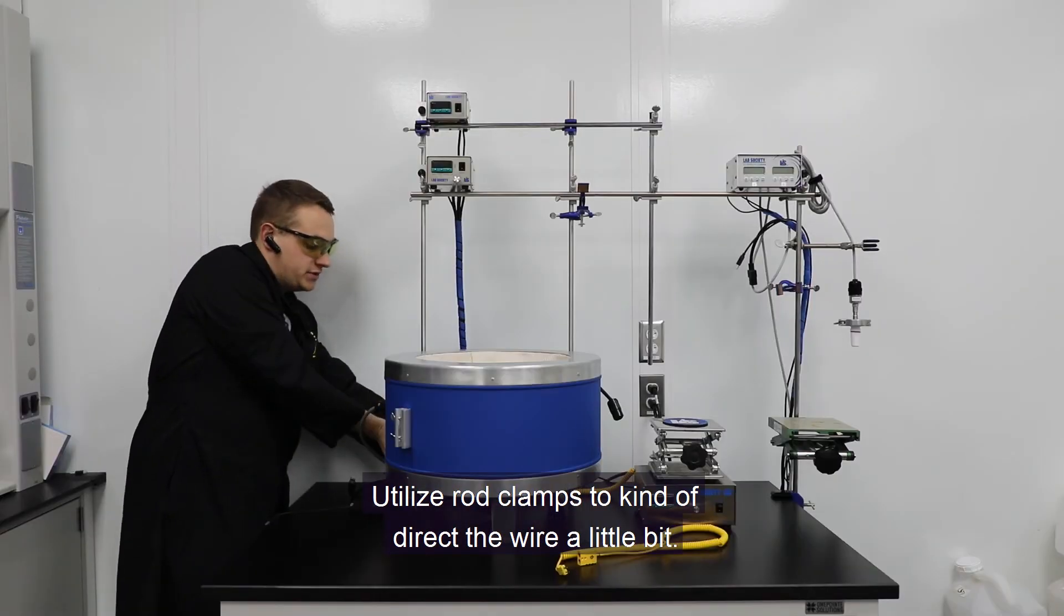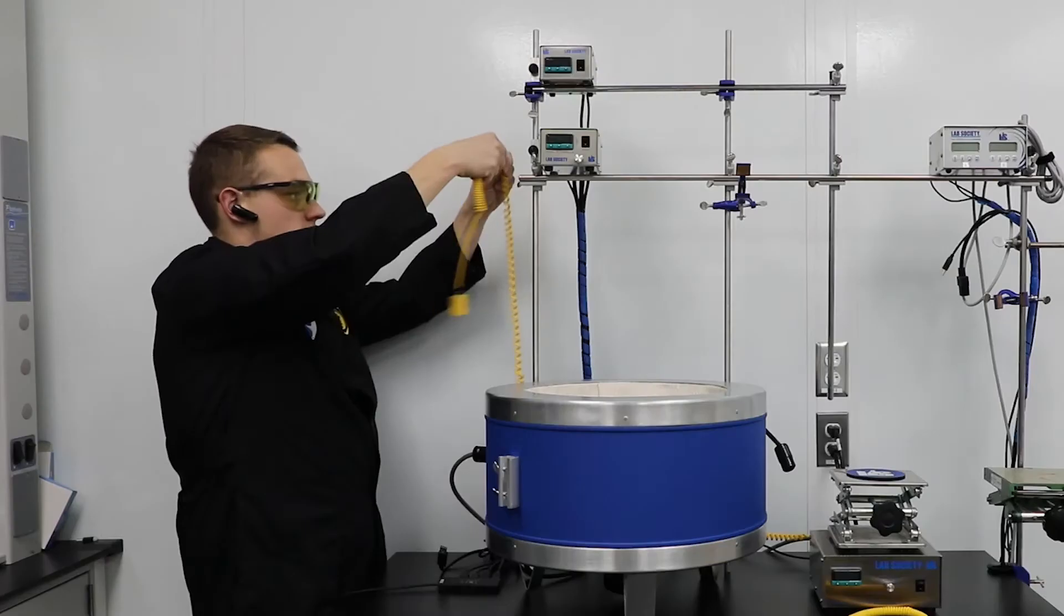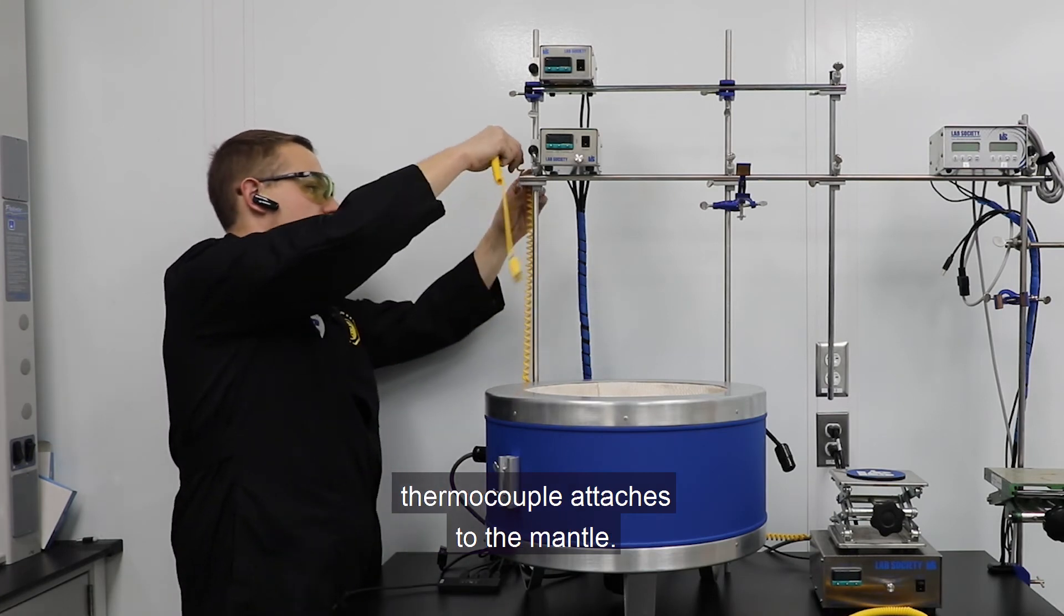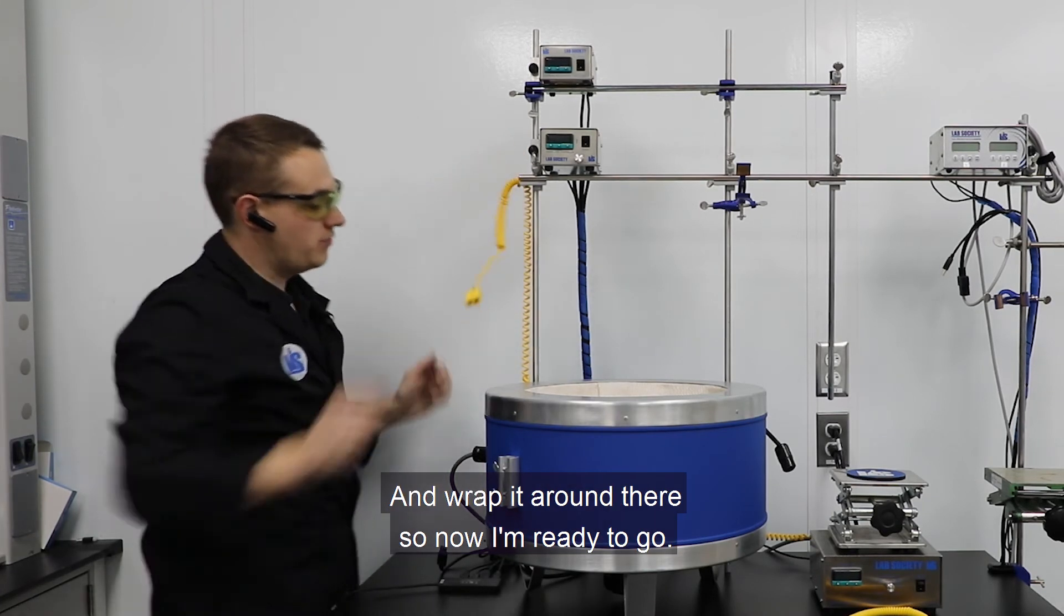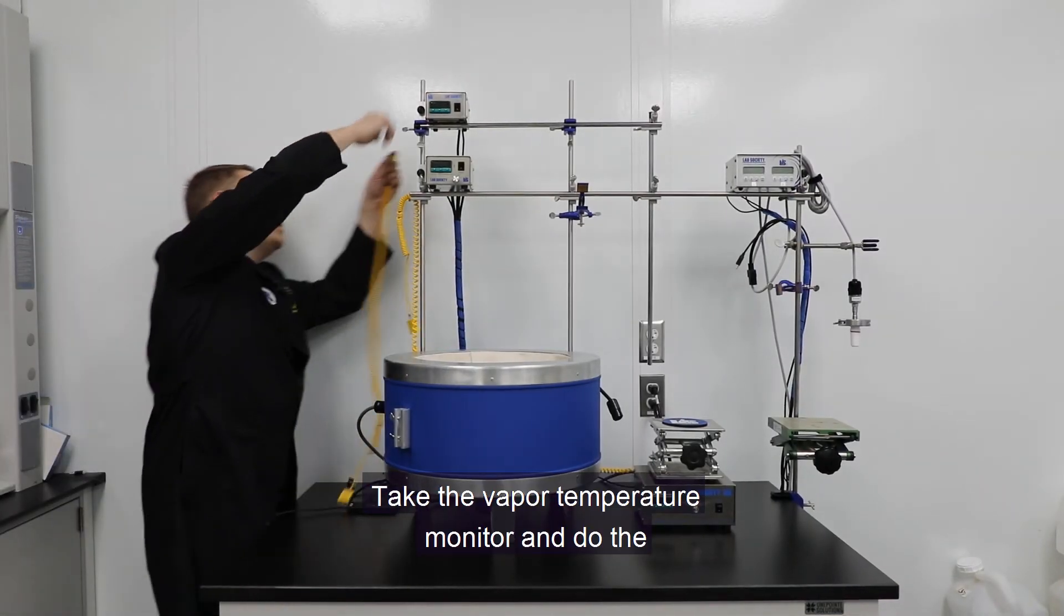Utilize the rod clamps to kind of direct the wire a little bit. And then to make sure there's no tension on where the thermocouple attaches to the mantle, I'm going to put it wrapped around there. So now I'm ready to go. And then for the vapor temperature monitor, I'm going to set it exactly.